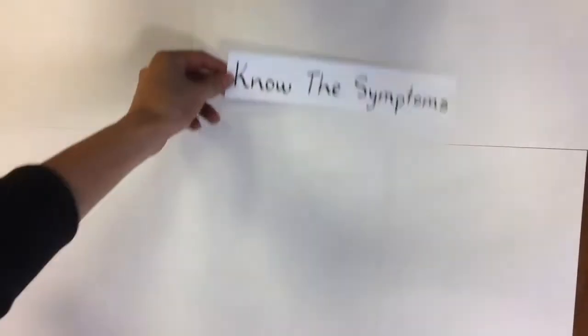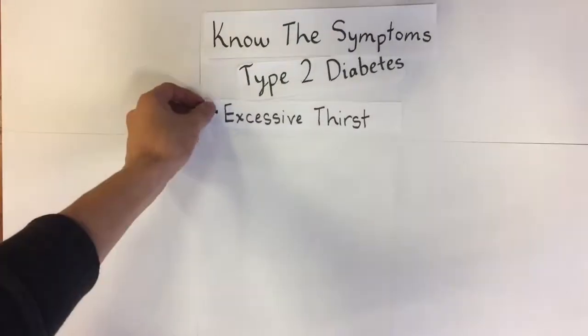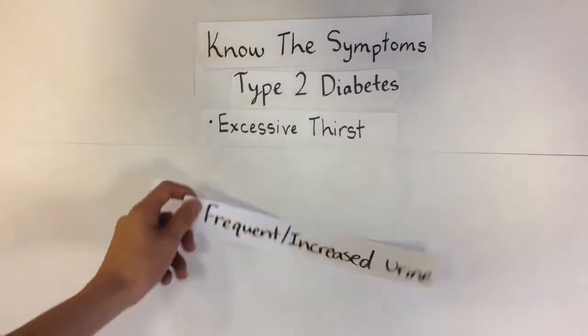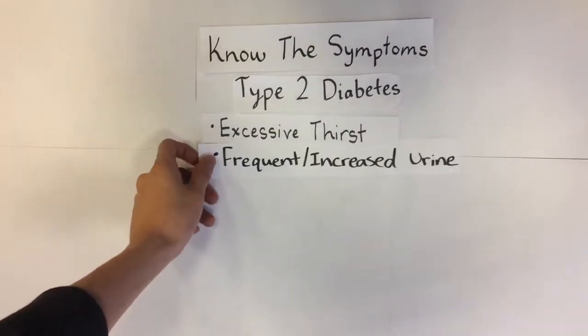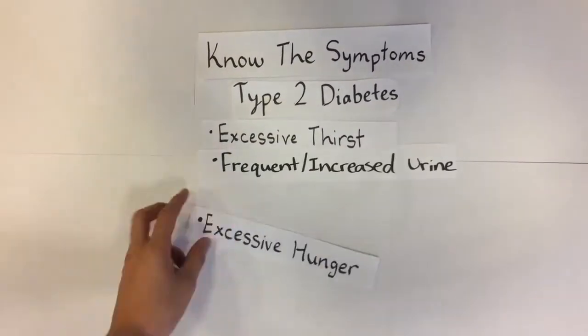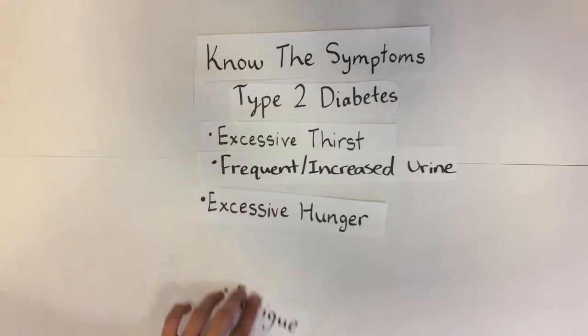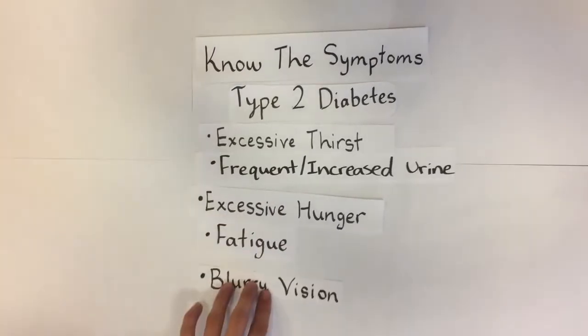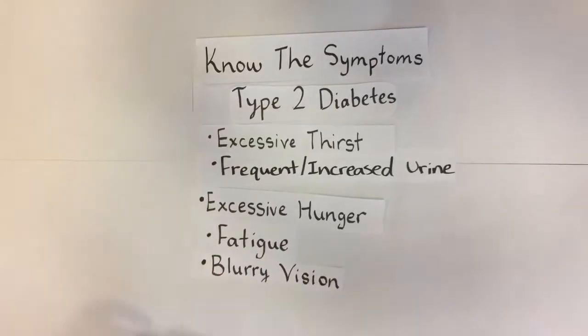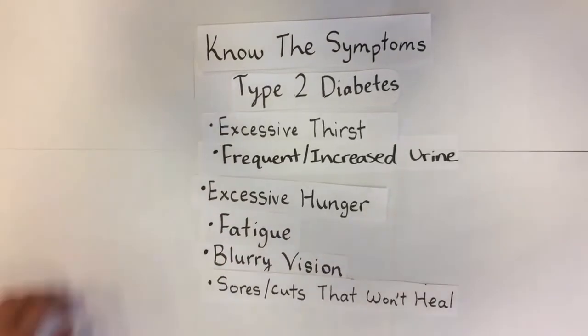Know the symptoms of type 2 diabetes. This includes excessive thirst, frequent or increased urination on a regular basis, excessive hunger, fatigue, blurry vision, and sores or cuts that will not heal.